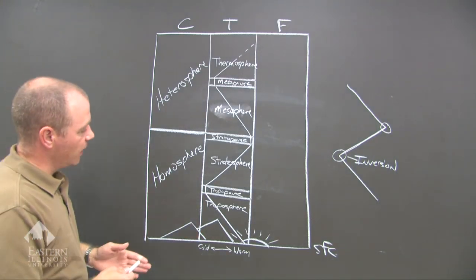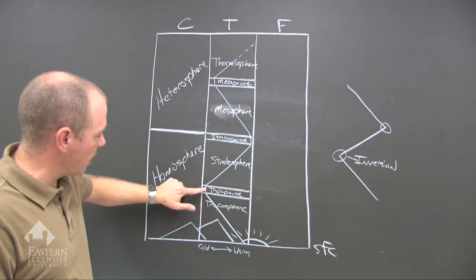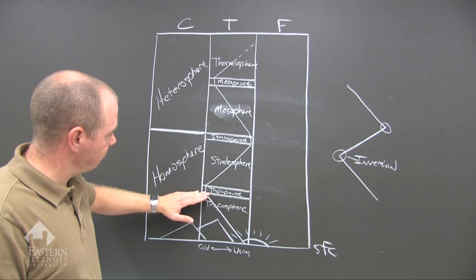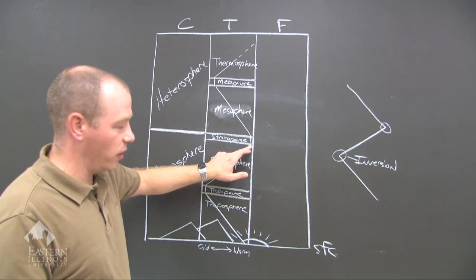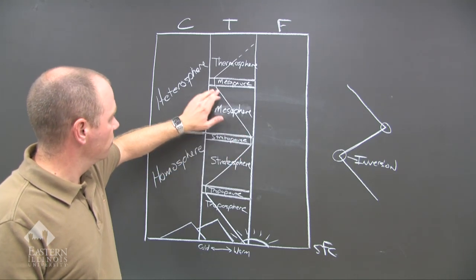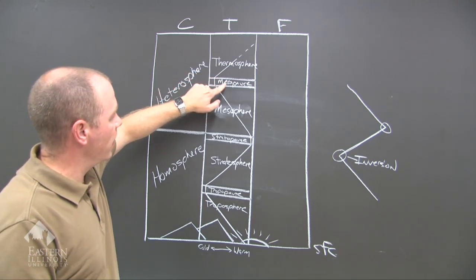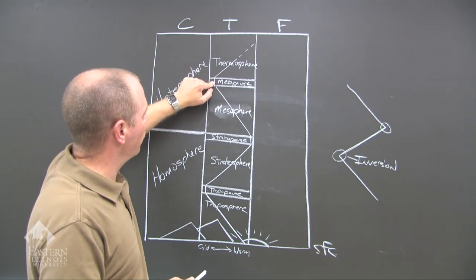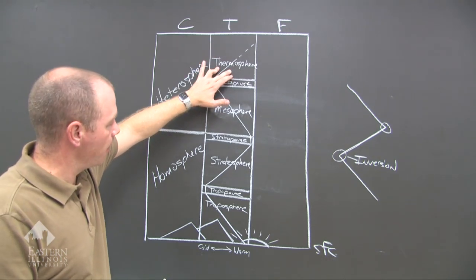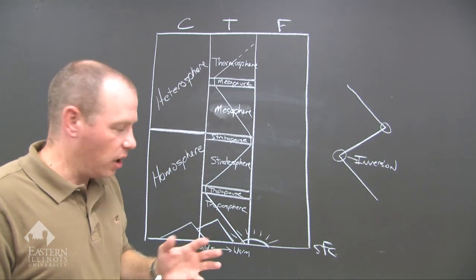Let's go through this one more time. The troposphere: temperature decreases with altitude. Then less temperature change over a distance of altitude — we call that the tropopause. Then a temperature inversion, and you get into the stratosphere where the temperature increases with altitude. Then it doesn't change very much — we call that the stratopause. The mesosphere: temperature decreases with altitude. Then no change of temperature for a distance — that is the mesopause. Then temperature increases with altitude in the thermosphere.